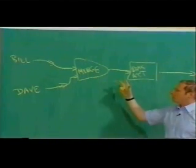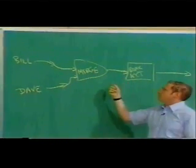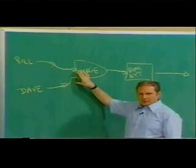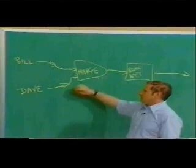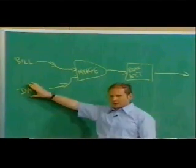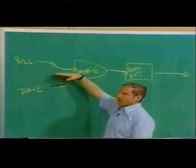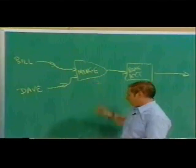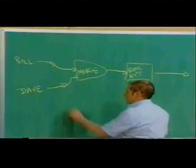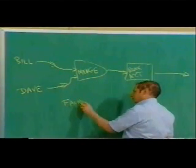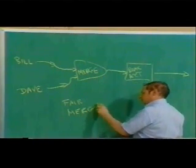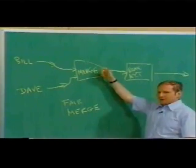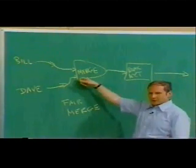You want to do something that's reasonable. Your first guess might be to say, well, we'll take alternate requests from Bill and Dave. But what happens if suddenly in the middle of this thing, Dave goes away on vacation for two years? Then Bill is stuck. So what you want to do is what people call a fair merge.